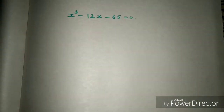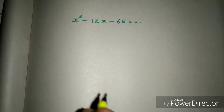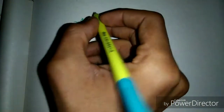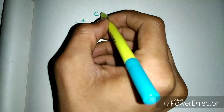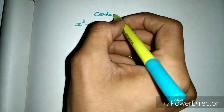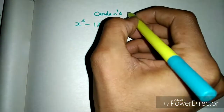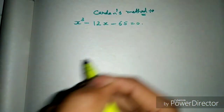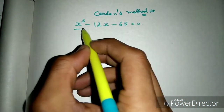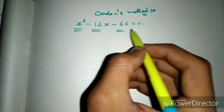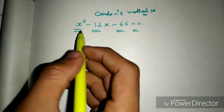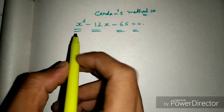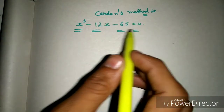Welcome friends, welcome to my channel Ganitjian. Now I am going to discuss a very important method: Cardan's method. We will see how to solve Cardan's method for cubic equations. Here the equation is x³ - 12x - 65 = 0, which is the general form of Cardan's method.